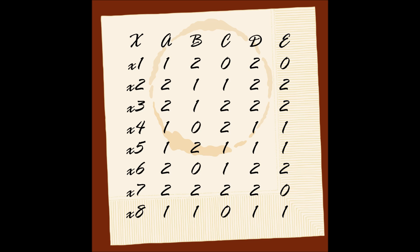Now we can begin searching for reducts. A reduct is the minimum number of attributes in a system that preserves its indiscernible relationships. Attribute E is not rough — when examining the information system, we can see that there are no identical tuples with different values for E.